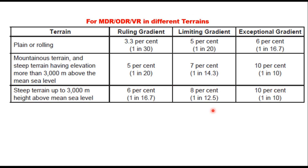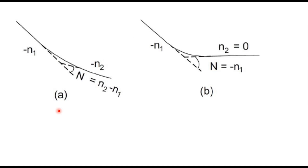Similarly, for MDR, ODR, and village roads, ruling gradient, limiting gradient, and exceptional gradients are suggested for different types of terrain. These are the limiting values that should be used while designing the vertical profile of a road.